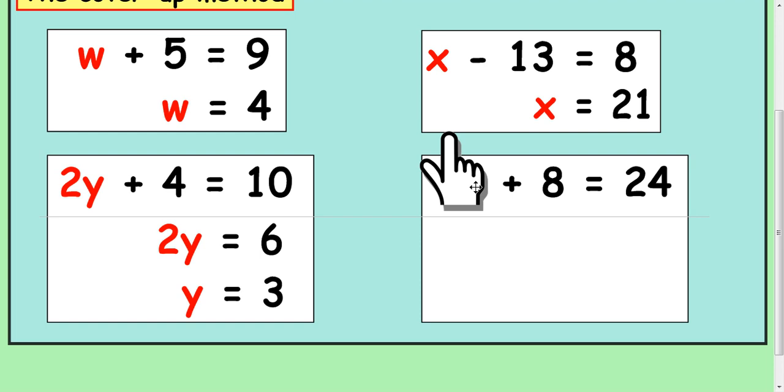And the same with this idea here. We cover up the 4z. And say to yourself, what do you add 8 to to get 24? And the answer to that is 16. Well, under the hands, 4z. So, 4z is equal to 16. I'm looking for 1z. So, I need to divide by 4 to get that up. So, the answer is 4.